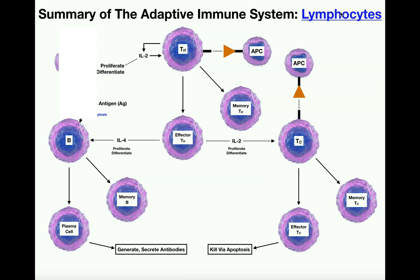These innate immune cells are constantly patrolling, looking for things that require an immune response. They're also not specific — they'll pretty much attack anything that falls into their repertoire. In contrast, the adaptive immune system is very specific.